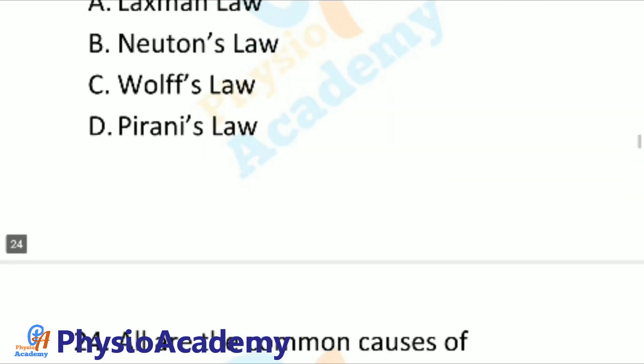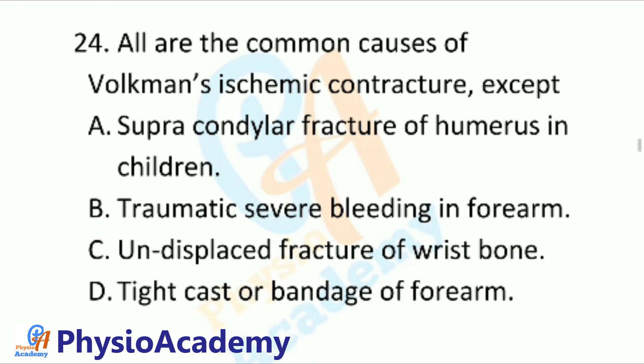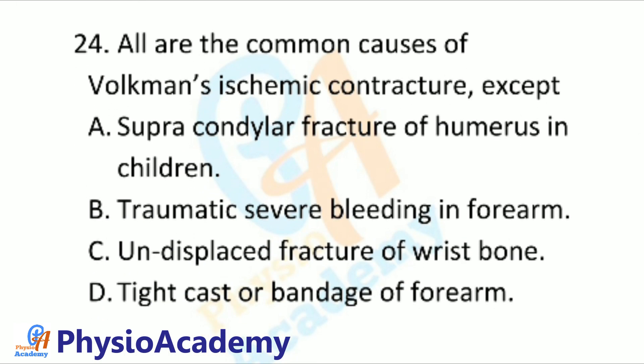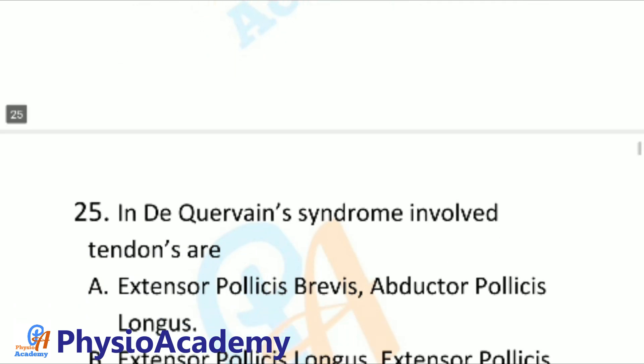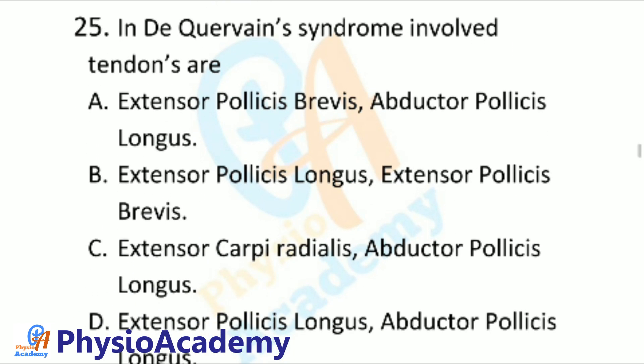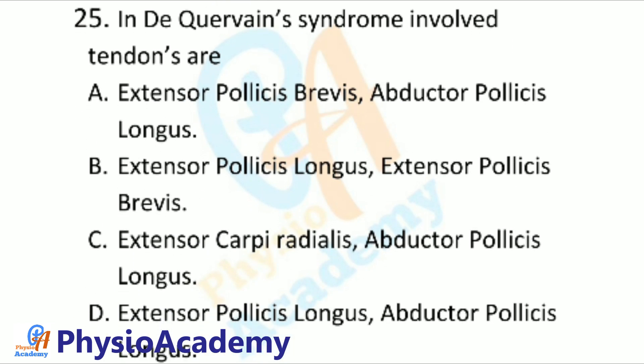Question number 24: All are common causes of Volkmann's ischemic contracture except: Option A: Supracondylar fracture of humerus in children. Option B: Traumatic severe bleeding in forearm. Option C: Undisplaced fracture of wrist bone. Option D: Tight cast or bandage of forearm.